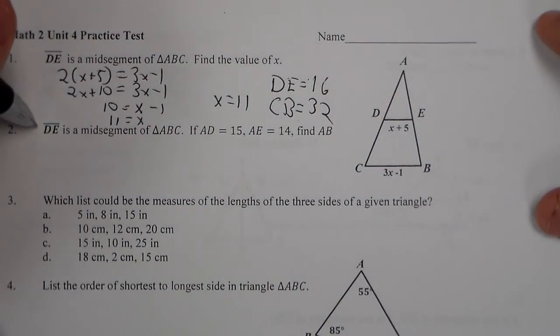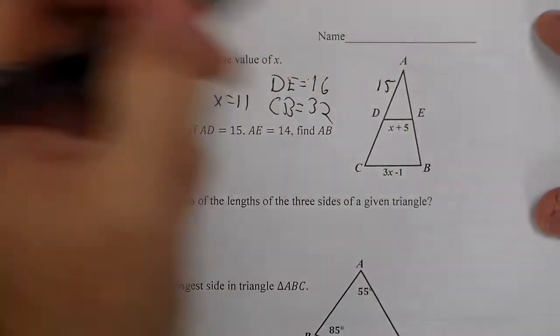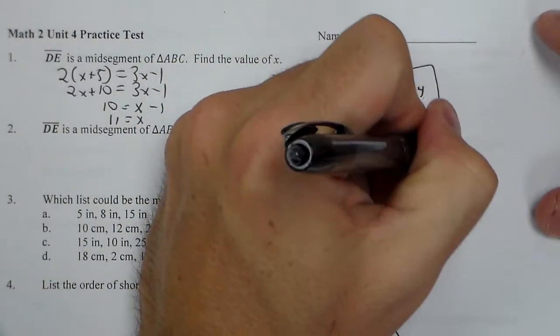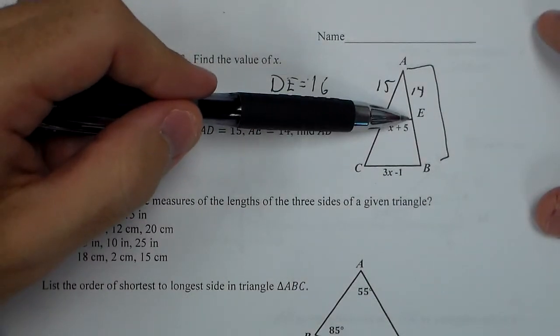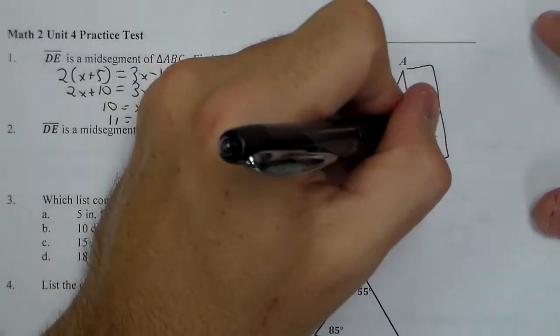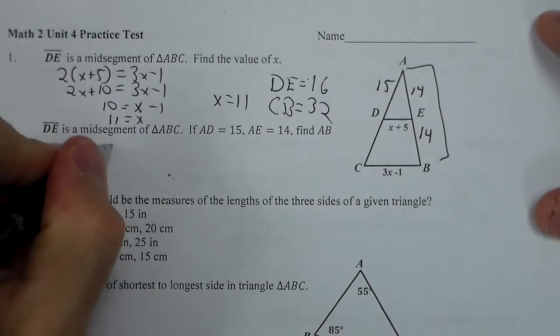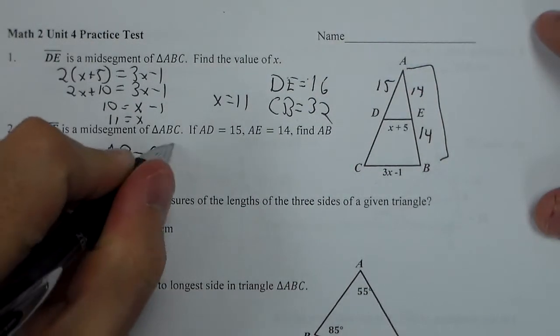Now for number 2, DE is the midsegment. I have that AD is 15, AE is 14. I need to find AB. Well, since I have a midsegment here, E is the midpoint, which means if this is 14, that's 14 as well. So AB is 28.